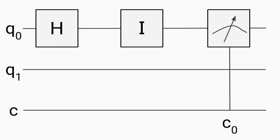Here is another quantum circuit. In this case, we are applying a Hadamard gate to qubit 0, followed by an identity, and then a measurement, storing the information on classical bit 0. Obviously we can also measure qubit 1 if we wanted, but just for simplicity we are only measuring qubit 0 in this quantum circuit. When we apply the Hadamard gate to qubit 0, we are putting it into a uniform superposition in the plus state, as we are applying the Hadamard gate to the 0 state. Then we apply an identity, which means nothing happens to the quantum state, so we are still in the plus state in the uniform superposition.